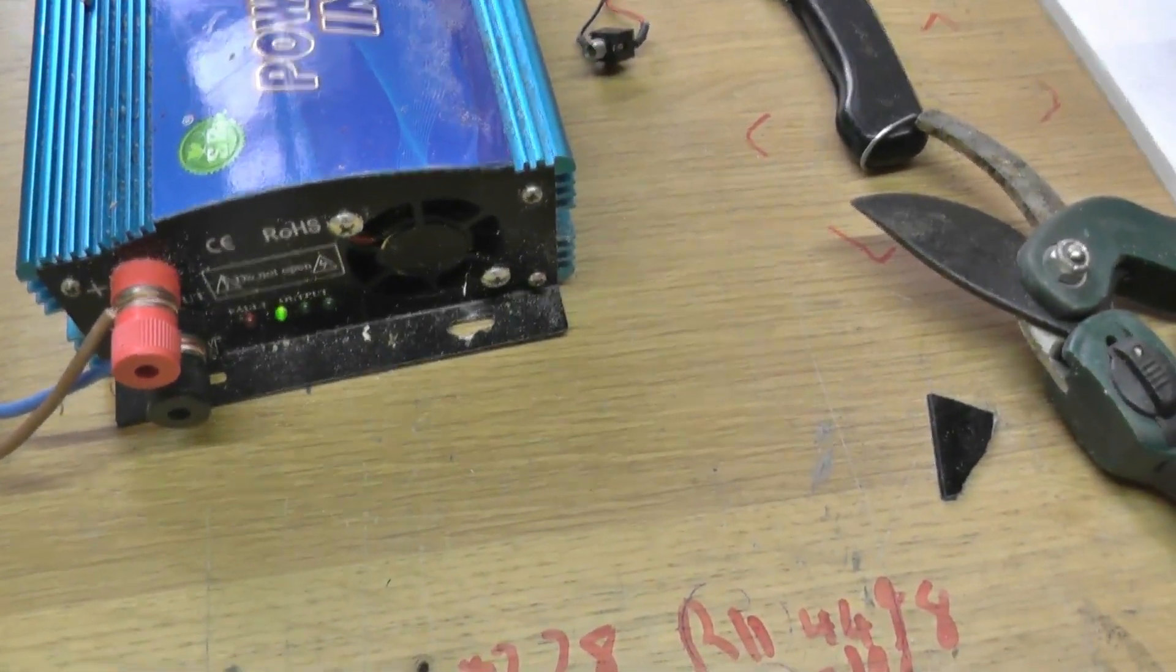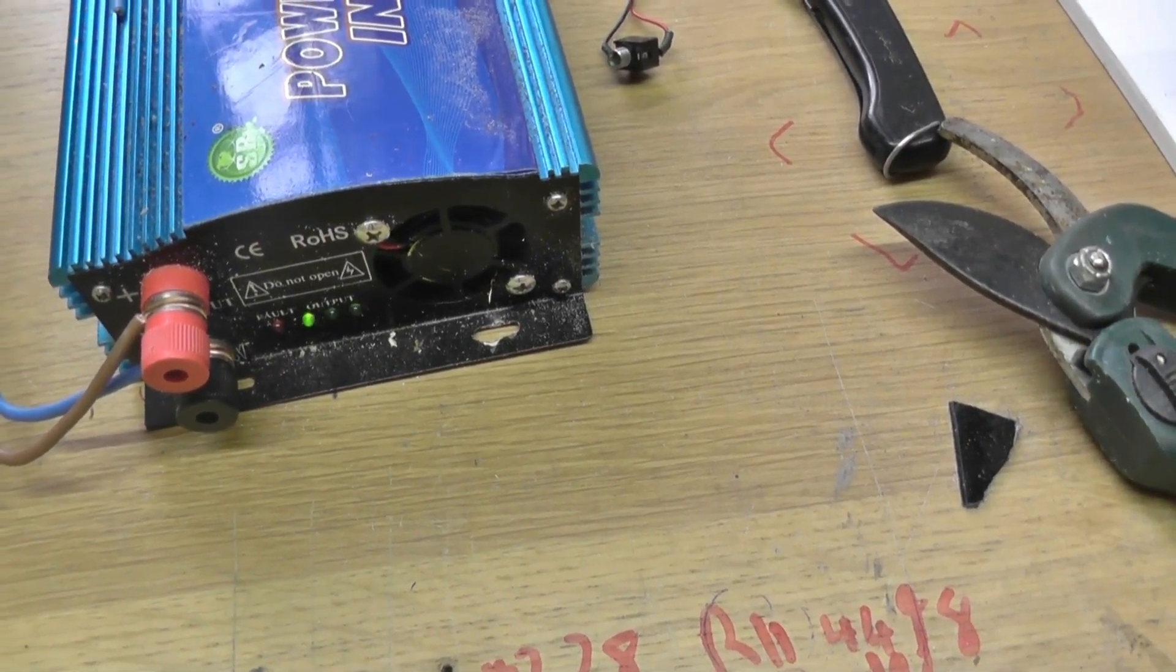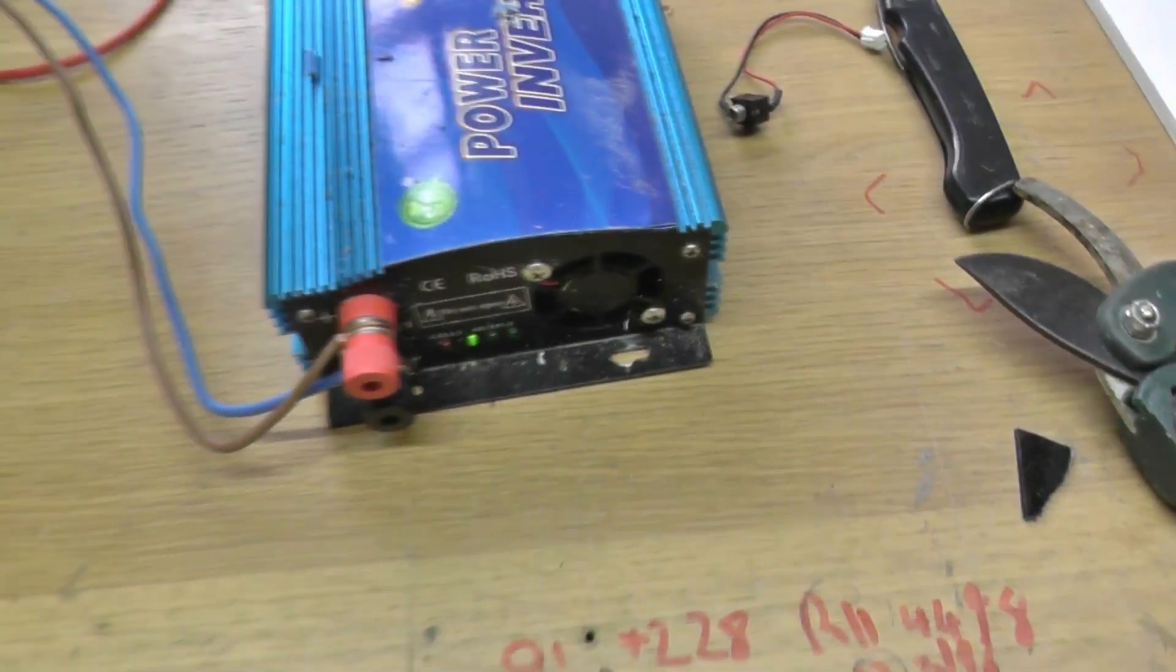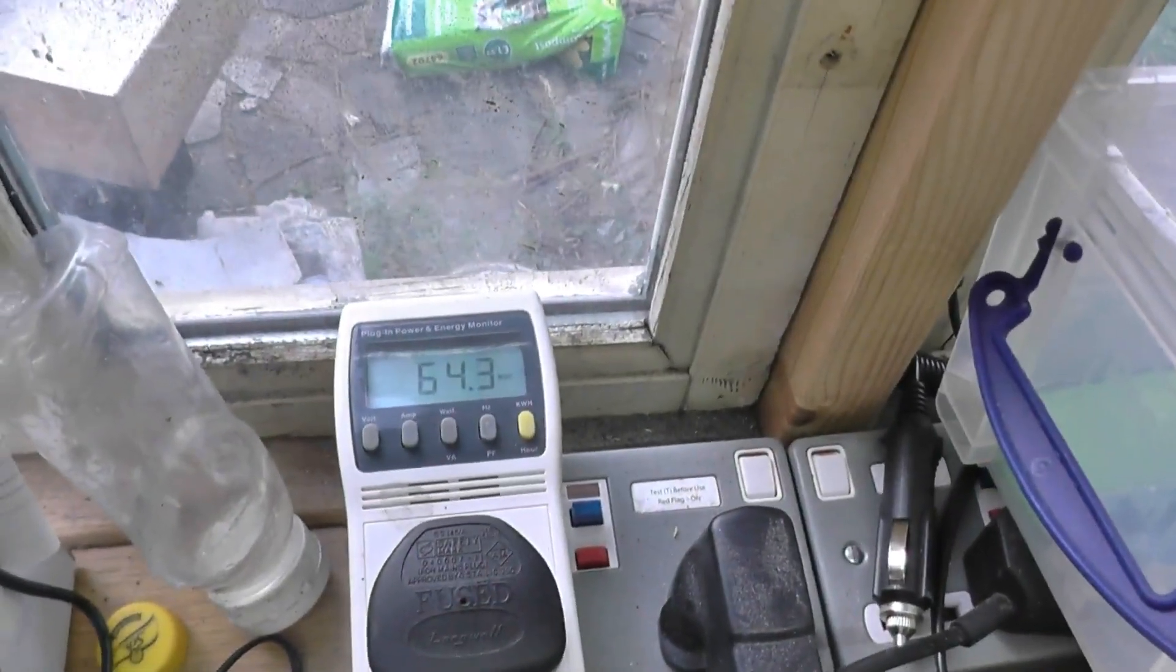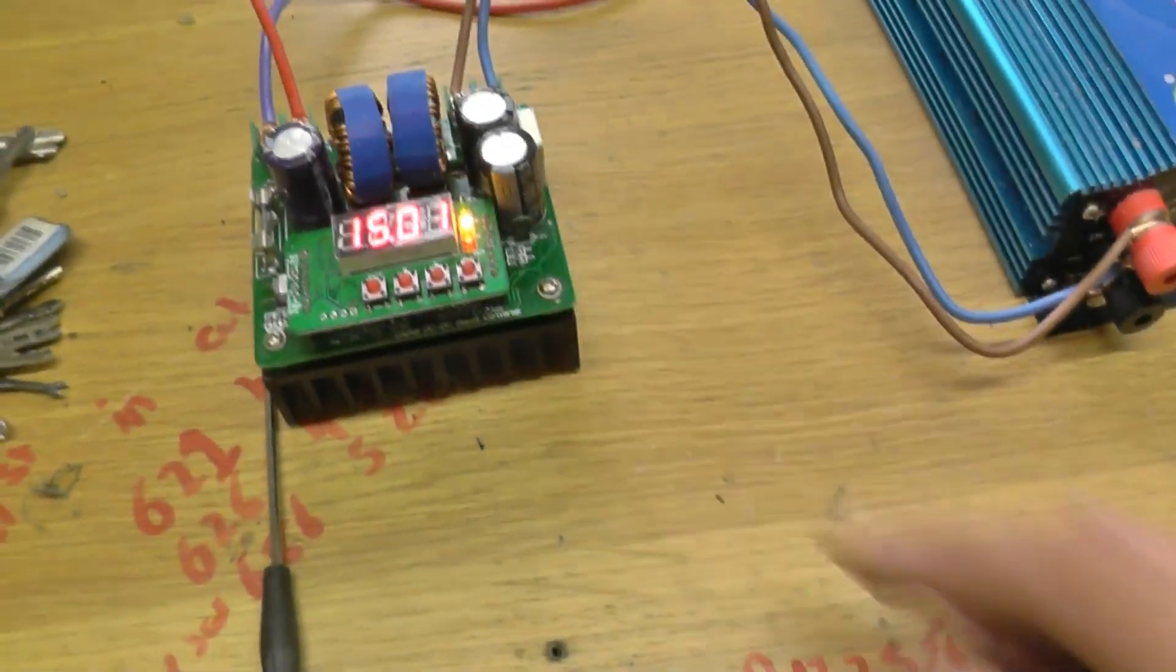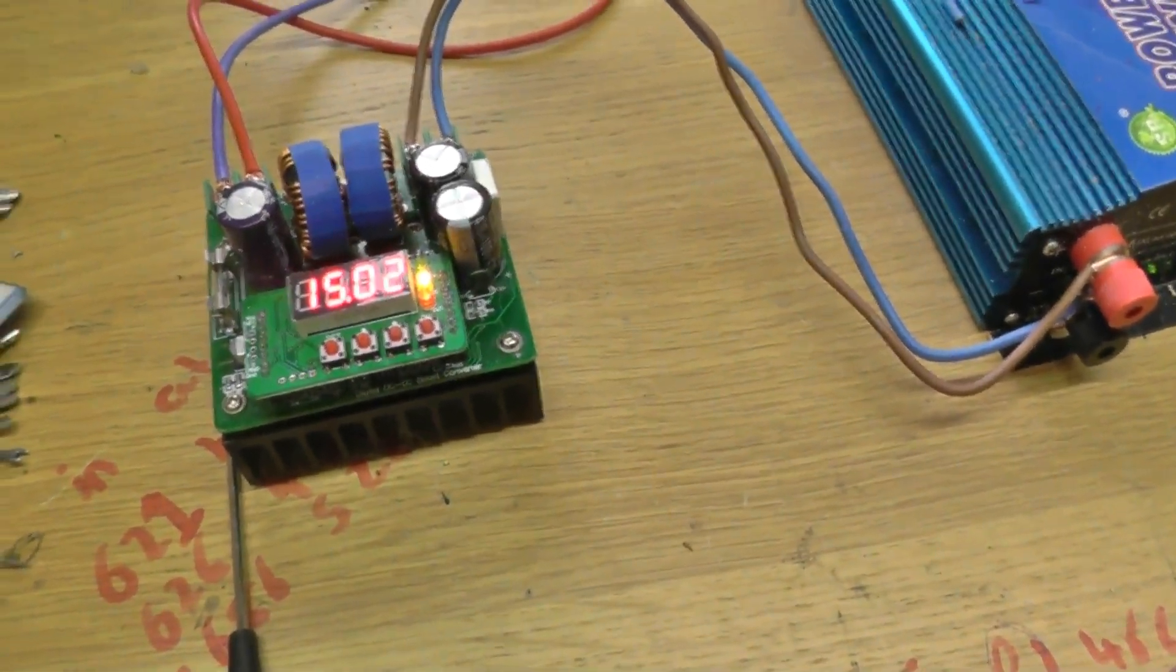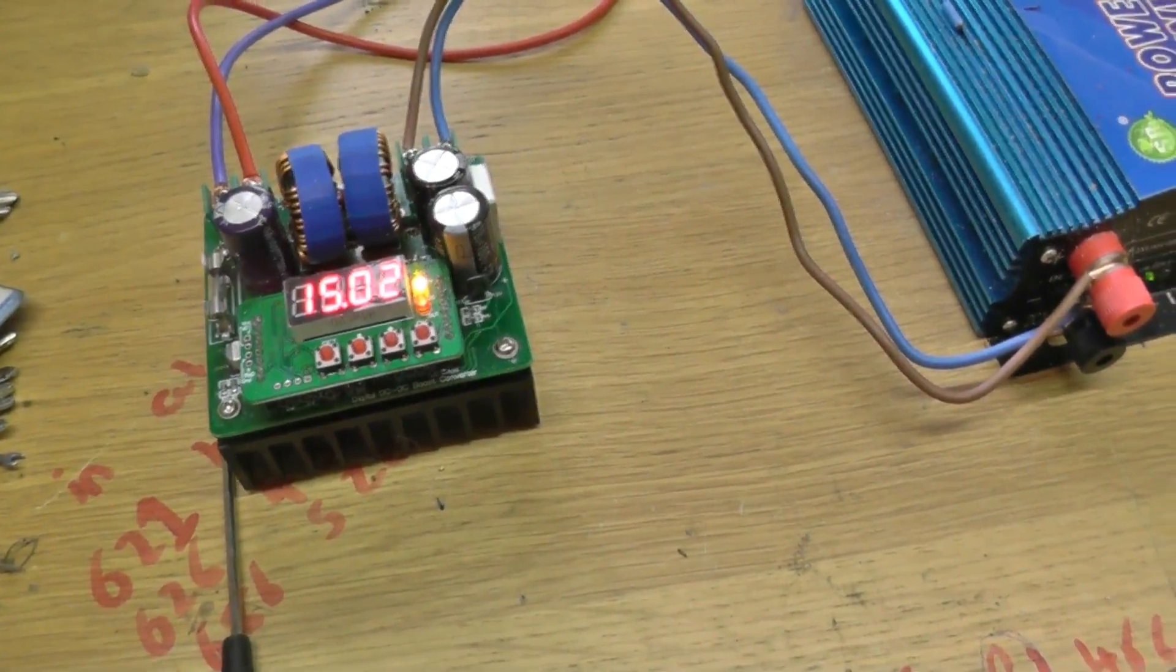But what we see over the grid tie inverter is the lights are now going in sequence, meaning it's putting power out. But how much power is it putting out? If we look up here it's doing 64 watts. So we're driving at 5 amps 15 volts. So you work it out.